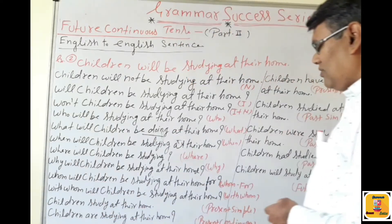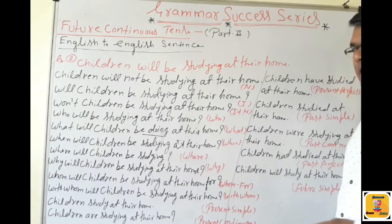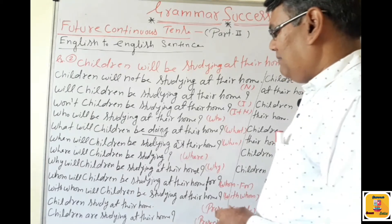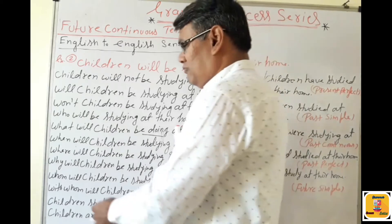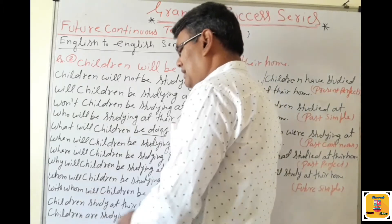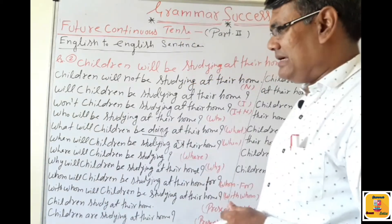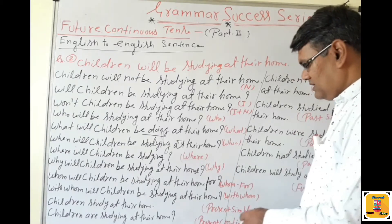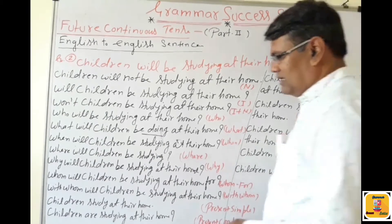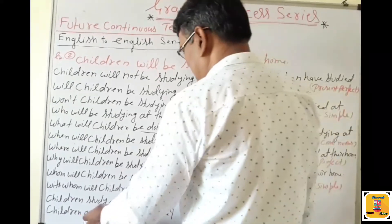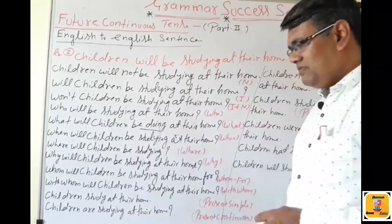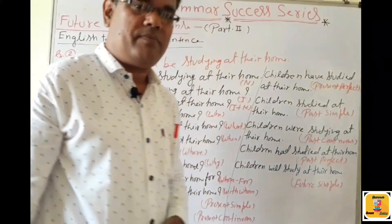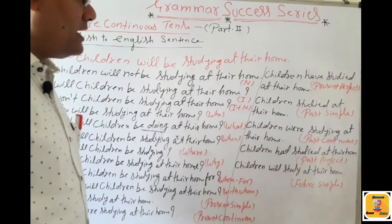Present Simple: 'Children' is a plural subject, so use first form of verb. 'Children study at their home.' Present Continuous: 'Children' is plural subject, so use 'are.' 'Children are studying at their home.' Because 'children' is a plural subject, use 'are' and add -ing.